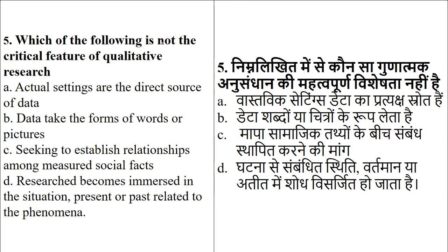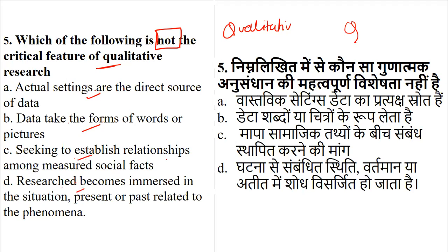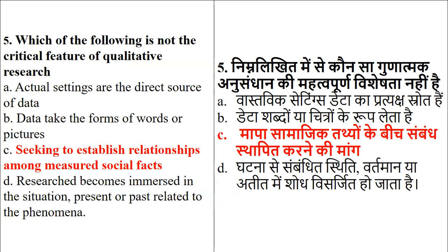Next question: which of the following is not a critical feature of qualitative research? Please remember the word 'not.' Options include: actual settings as direct source of data, data that takes the place of words, establishing a relationship among facts, or becoming immersed with the situation. Out of the given options, the one which is not a feature of qualitative research is the one which establishes the relationship among the facts — this is something found in experimental or quantitative research.